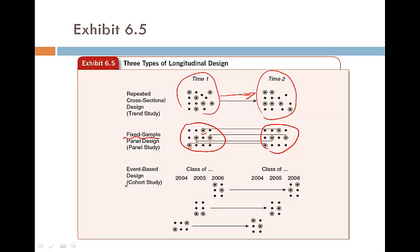The third type is called a cohort study. We follow people from one cohort — for example, 2004 students, or baby boomers — and follow these cohorts over a period of time. So these are the three types of longitudinal design.